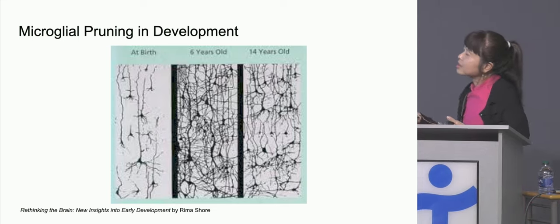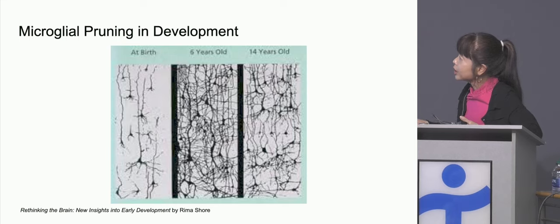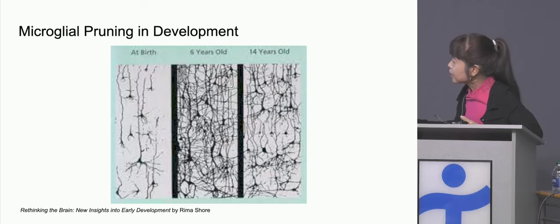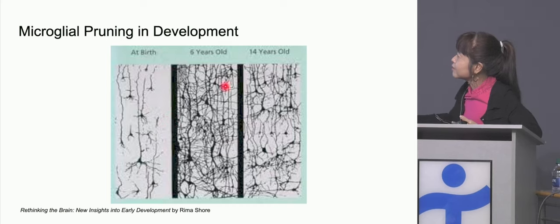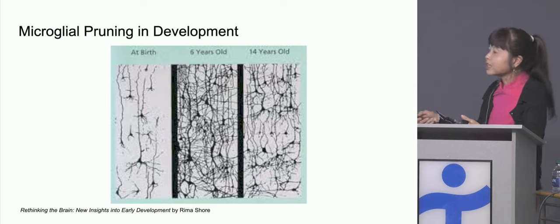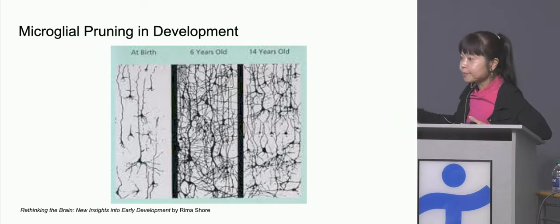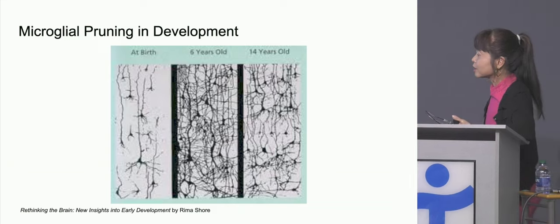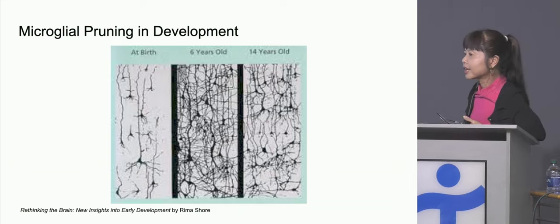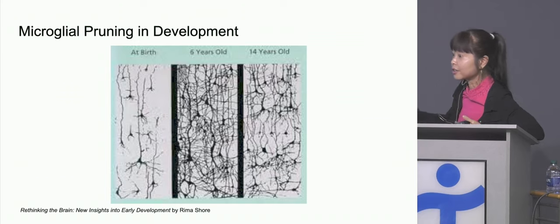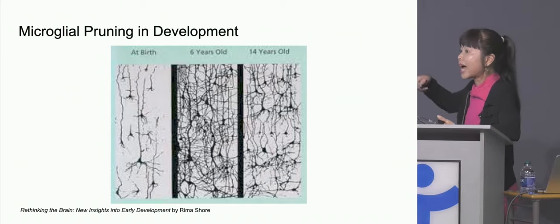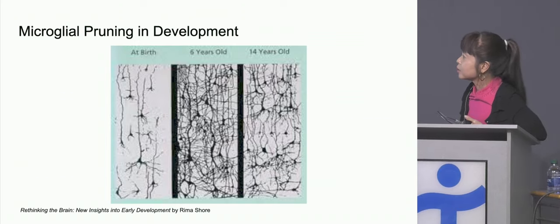Here is an artist's representation of what's going on in the brain of developing children. At birth you have some neurons, but by six years old you have a whole lot more density of neurons and synapses. But look what happens at 14 compared to six — a lot less. Those microglia are really important in pruning the brain during development. If they don't do it correctly, we can have diseases such as schizophrenia. There's a lot of research around microglial pruning and aberrant pruning in the development of those diseases.